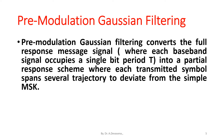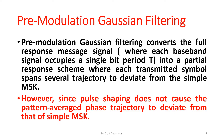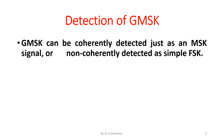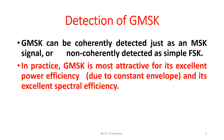Pre-modulation Gaussian filtering converts the full response message signal into a partial response scheme, where each transmitted symbol spans several bit periods. However, since pulse shaping does not cause the pattern-averaged phase trajectory to deviate from that of simple MSK, GMSK can be coherently detected just as an MSK signal, or non-coherently detected as a simple MSK signal.